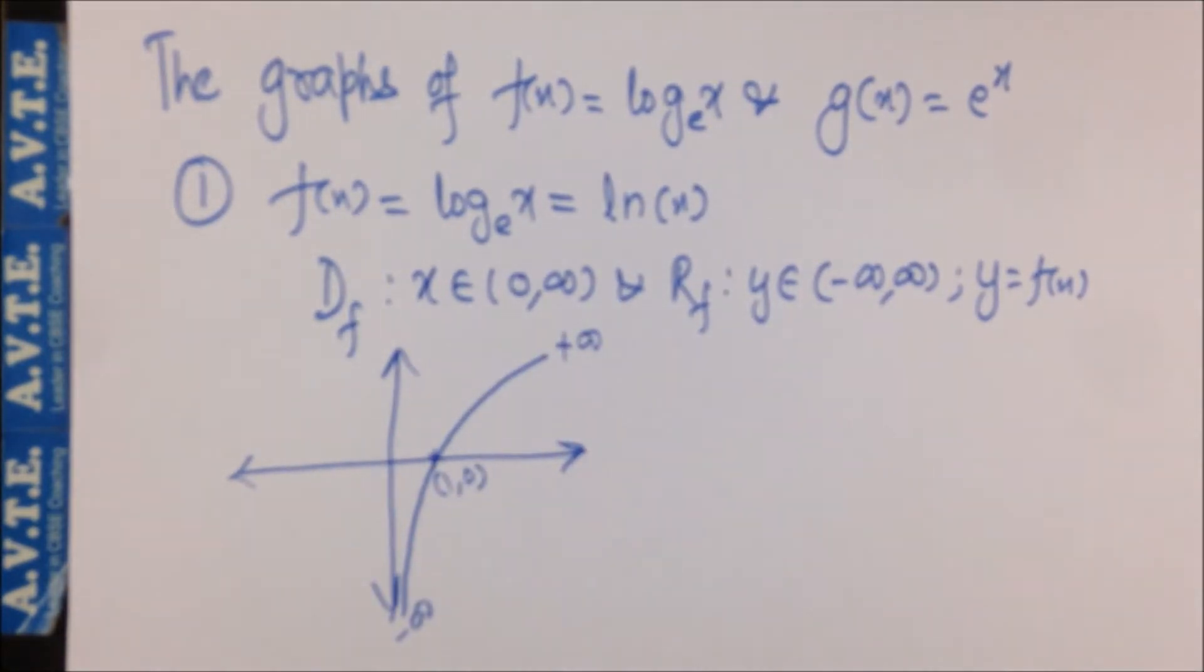So this graph shows the monotonic nature because when you are increasing x, the output is also increasing. If the output keeps on increasing or keeps on decreasing when you increase x, these are called monotonic functions. So clearly log x base e is a monotonic increasing function or strictly increasing function.